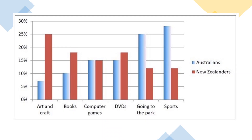Here you have an example graph. The first question to ask yourself is: is it dynamic or static? Don't immediately start writing — first look at the graph and decide. We don't see any time reference here at all, so it is static. The keywords are Australians and New Zealanders. The other keywords are: art and craft, books, computer games, DVDs, going to the park, and sports. The unit of measurement is percentages, from 0 to 30%.